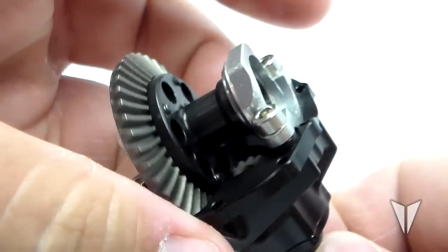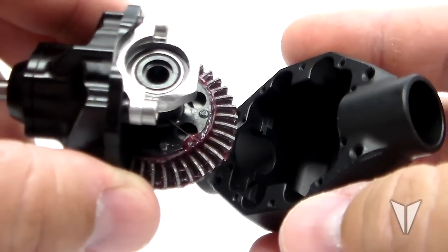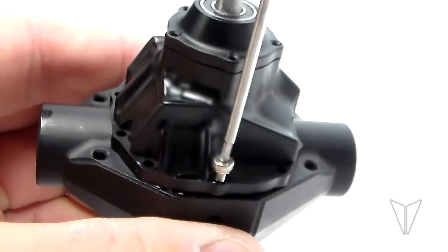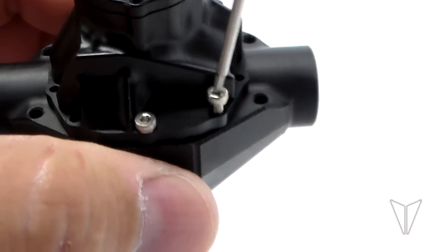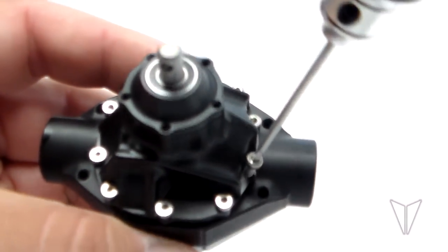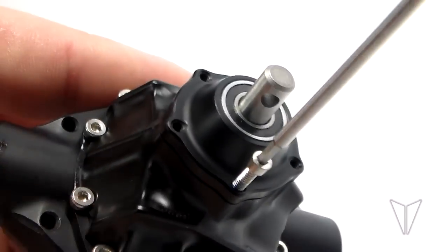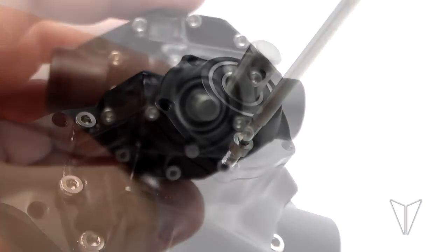Once that is done you can join the completed third member to the pumpkin. Note the orientation during install. Secure it in place using the M2 by six millimeter socket head hardware. Once that is complete you can install the 164 by 0.25 cosmetic screws.